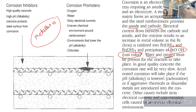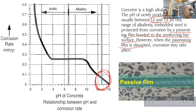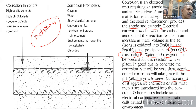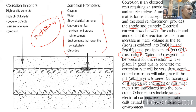In good-quality concrete, the corrosion rate is very slow because the pH is between 12 and 13. As the pH value decreases, the corrosion rate automatically increases. Aggressive chemicals, acid attacks, dissimilar metals, and stray currents also increase the corrosion rate. Corrosion inhibitors include high-quality concrete with a high pH level, which protects the steel surface from corrosion.